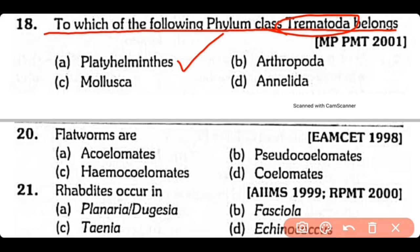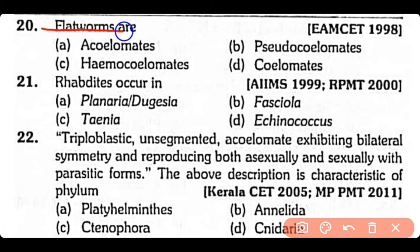Question no.20. Flatworms are: acoelomates, pseudocoelomates, hemocoelomates, or acoelomates? The correct answer is option A. Flatworms are acoelomate because they have solid mesoderm.